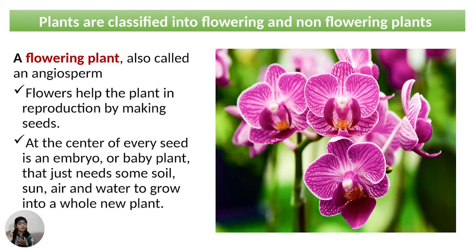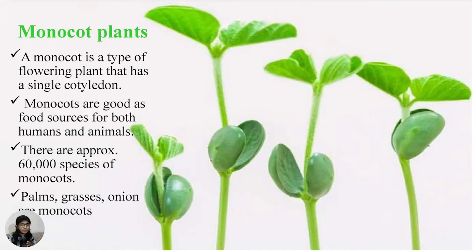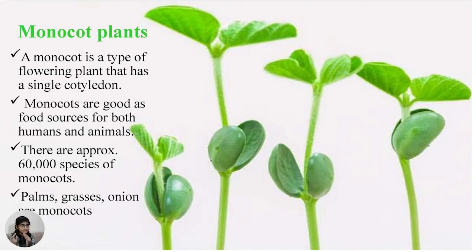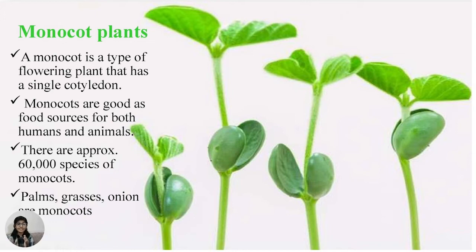Monocot plants: A monocot is a type of flowering plant that has a single cotyledon. Monocots are a good food source for both humans and animals. There are approximately 60,000 species of monocots.